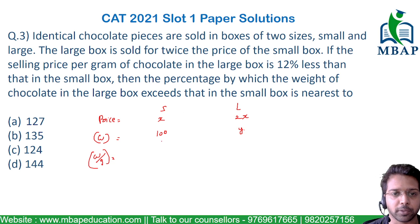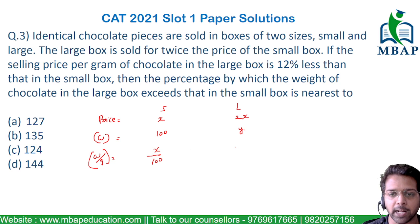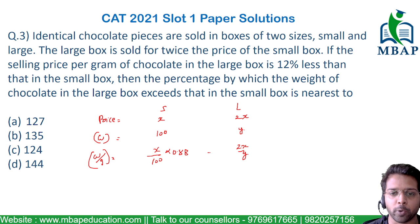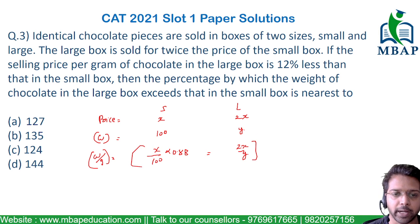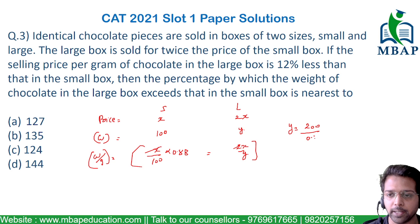The difference is basically 12%. So the price per gram for the smaller box will be x/100, and for the large box will be 2x/Y. And 2x/Y is 12% less than x/100. So x/100 × 0.88 should equal 2x/Y. This is the only expression we need to solve. x and x will get cancelled, and the value of Y will become 200/0.88.